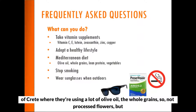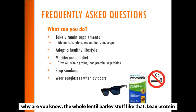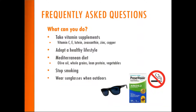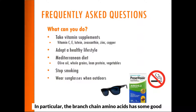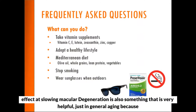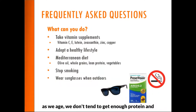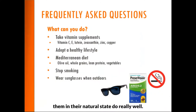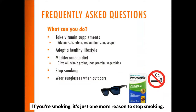The Mediterranean diet — not eating at Olive Garden — is a diet particularly from the island of Crete using a lot of olive oil, whole grains such as whole lentils and barley rather than processed flours, and lean protein. Boosting branch-chain amino acids in particular is starting to show more evidence of impact in slowing macular degeneration. Vegetables — especially green leafy vegetables — are at the heart of many of these vitamins, and those who consume them in their natural state do really well. If you're smoking, it's just one more reason to stop.